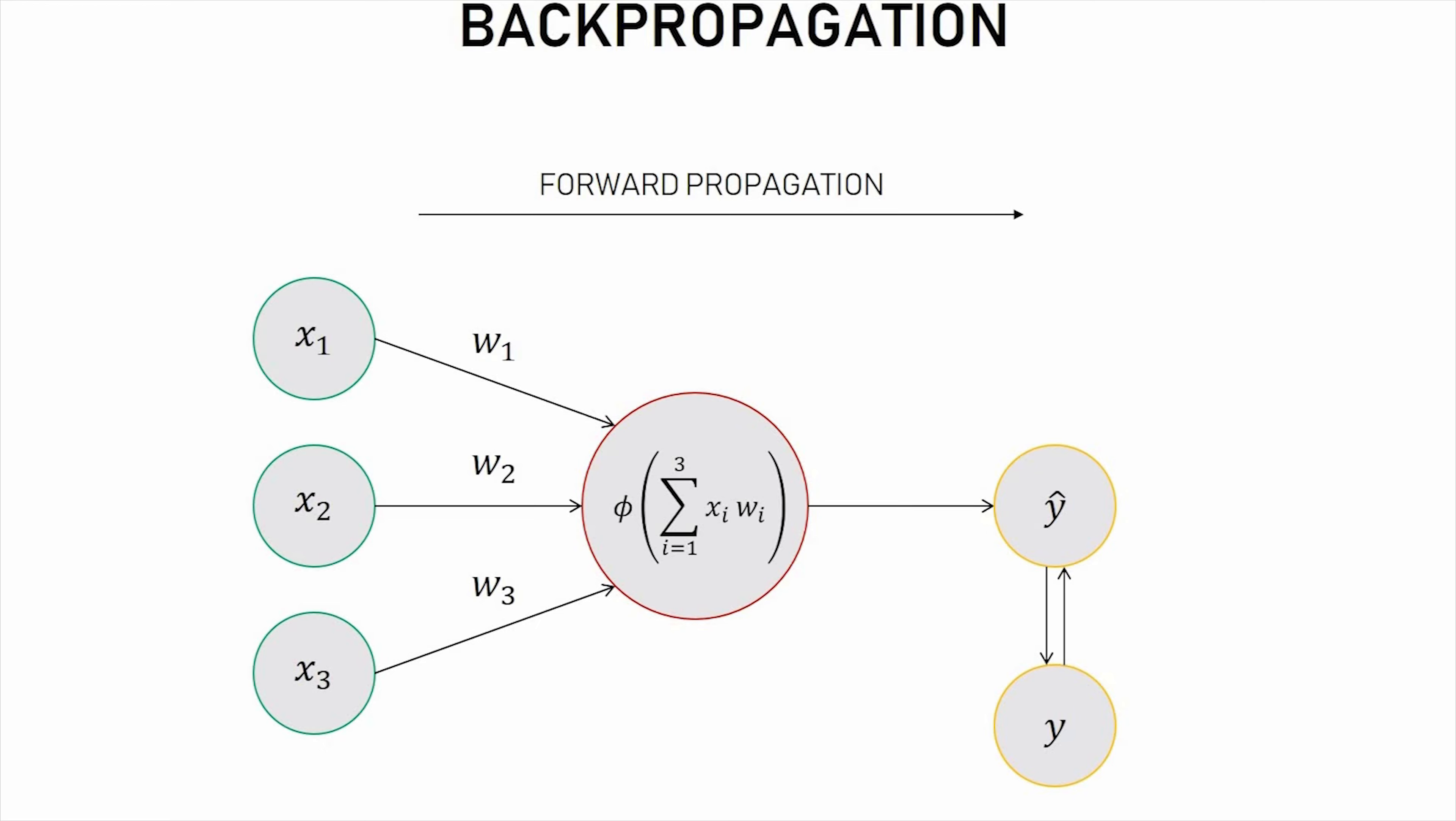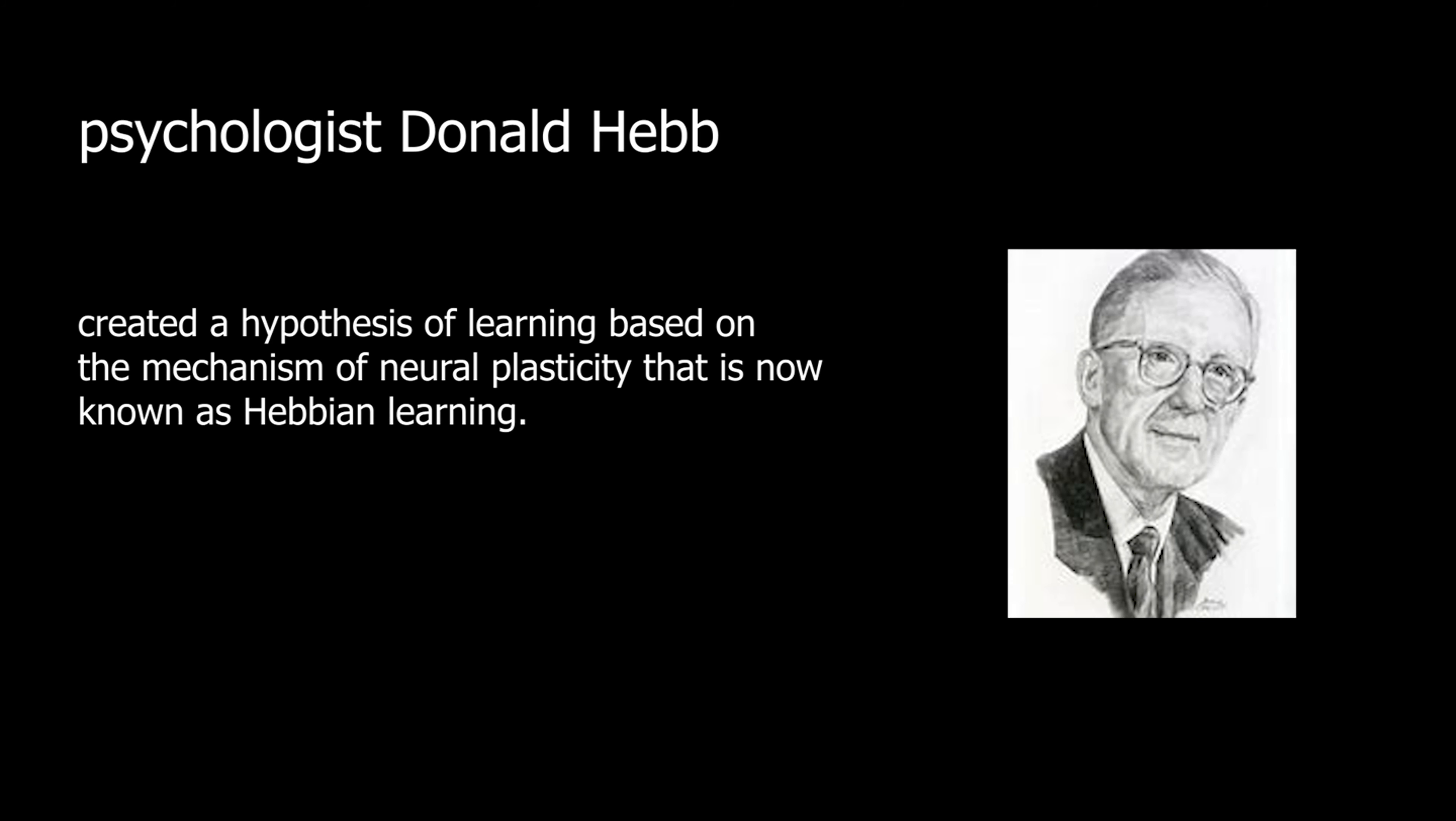This is now known as Hebbian learning. Hebbian learning is considered to be a typical unsupervised learning rule, and its later variants were early models for long-term potentiation.